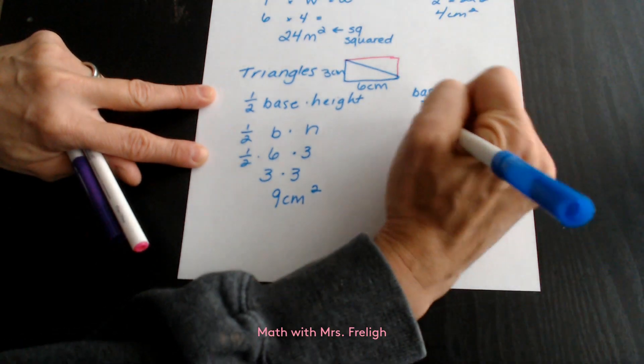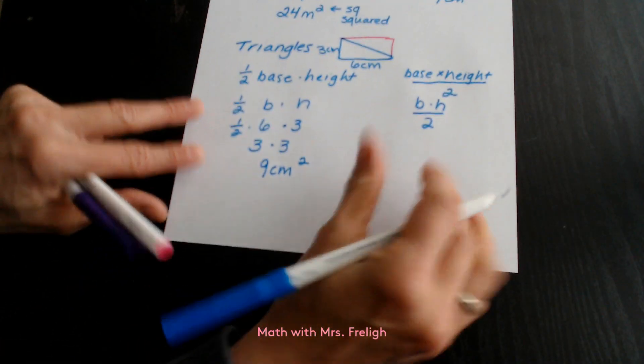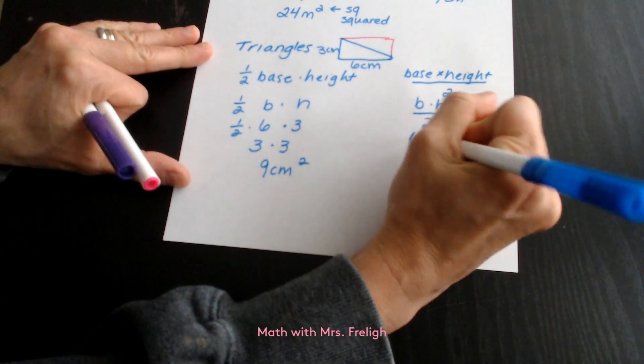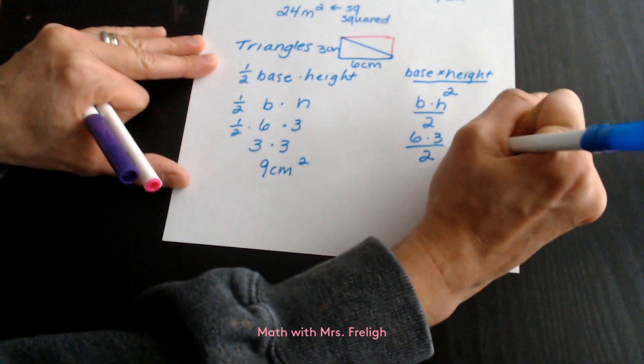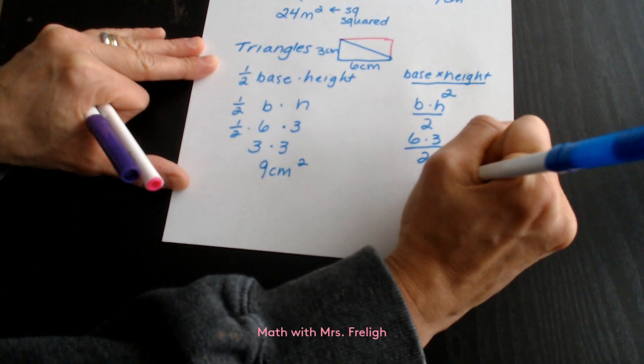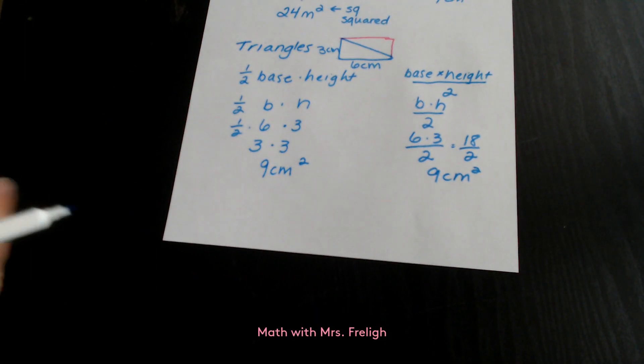If we use our other formula of base times height divided by 2, we would still get 6 times 3 divided by 2, which would be 18 divided by 2, so 9 centimeters squared. As you can see, you can use either formula to get the same answer.